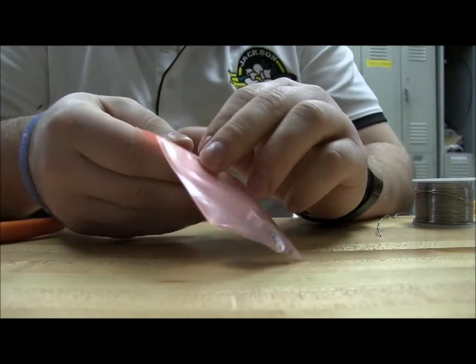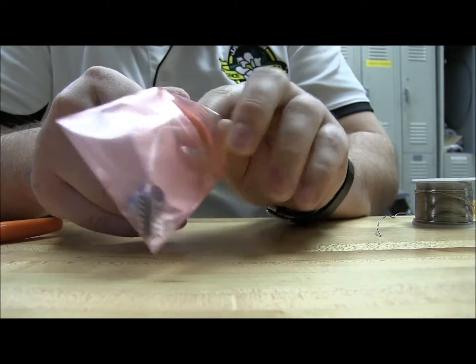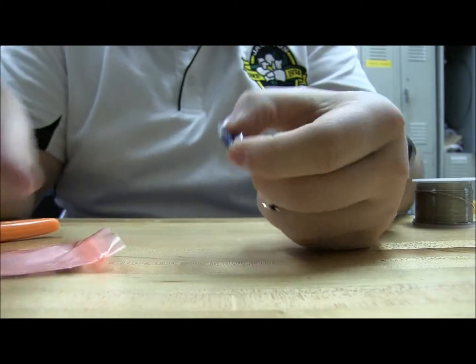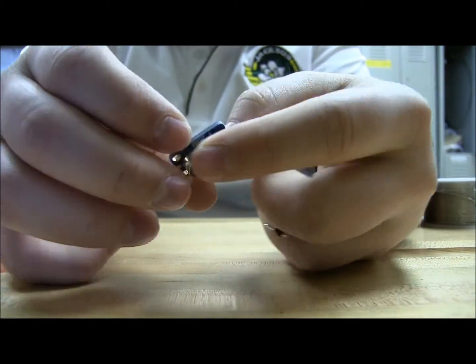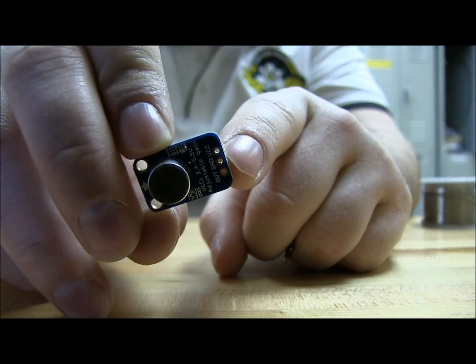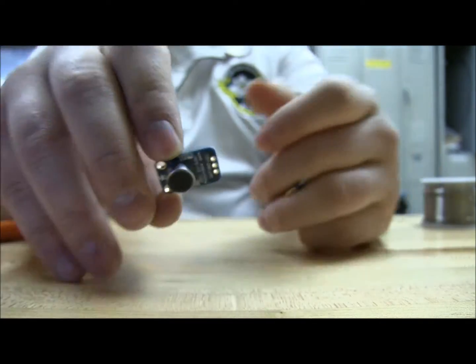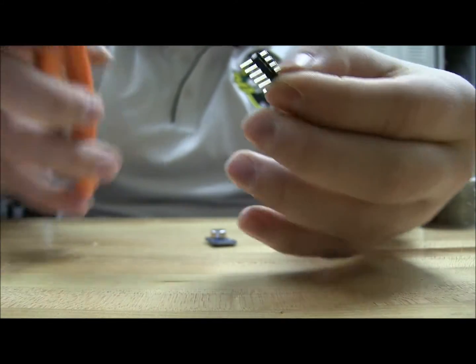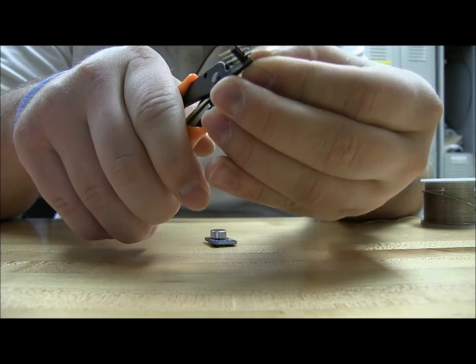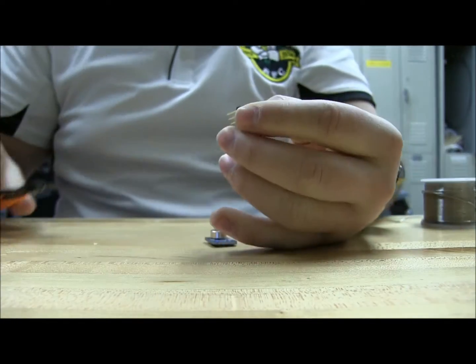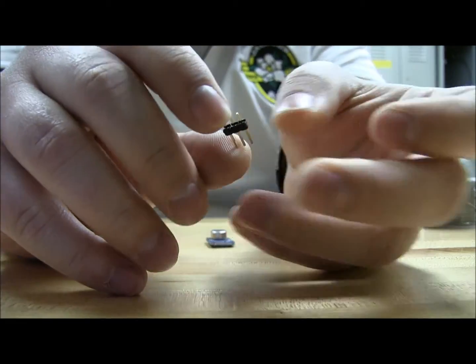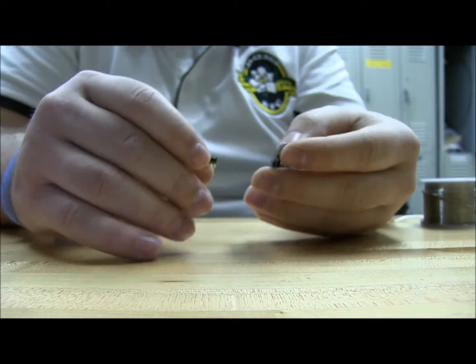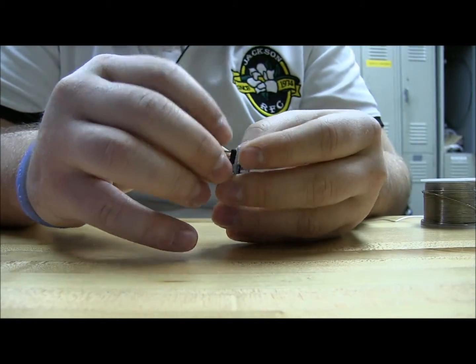your solder gun with the tip on it that's heating up, your little cleaning sponge and of course the solder. Alright, so our little microphone here comes with a few header pins and header pins are made to be soldered into these little holes so we can mount it on top of the breadboard